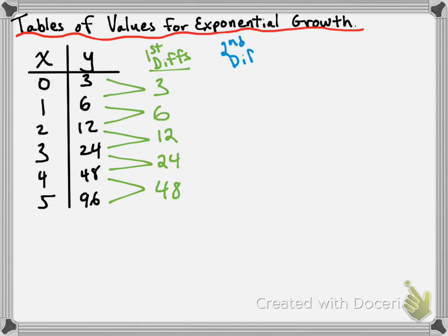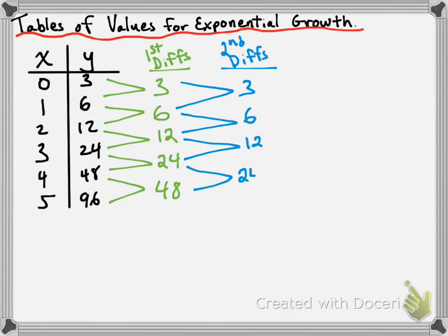If we take the second differences — subtracting on the first differences column — we get values of 3, 6, 12, and 24. Notice those are also not constant. Since the second differences are not constant, it's definitely not a quadratic function either. I just wanted to show you that they're definitely going to be different for an exponential growth problem.